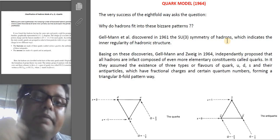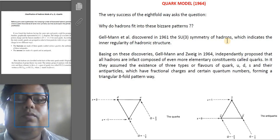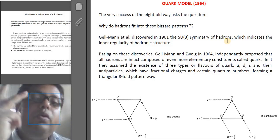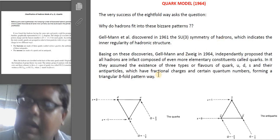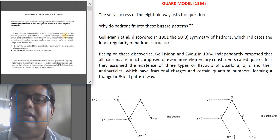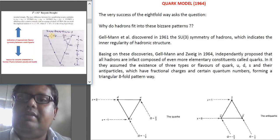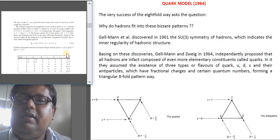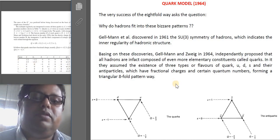In order to answer that, Gell-Mann and Zweig in 1964 proposed independently that all hadrons are in fact composed of even more elementary constituents called quarks, where they assumed the existence for the time being of only three types or flavors of quarks: the up, down, and strange quarks, and their antiparticles. I have already discussed this here in my first lecture.